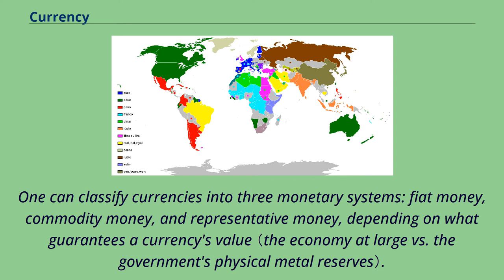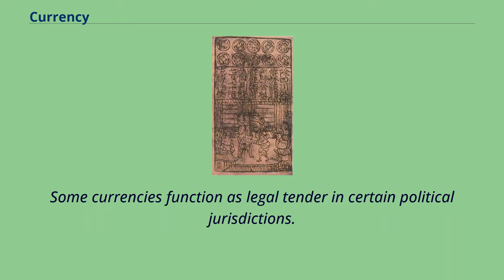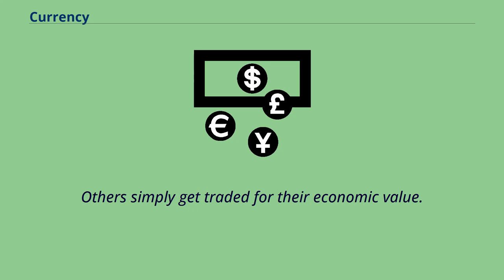One can classify currencies into three monetary systems: fiat money, commodity money, and representative money, depending on what guarantees a currency's value. Some currencies function as legal tender in certain political jurisdictions, while others simply get traded for their economic value.